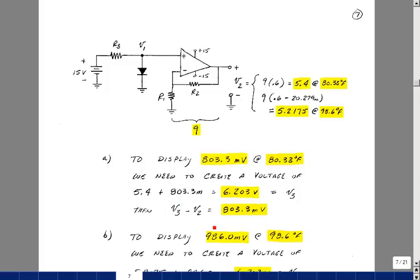I need to create a DC voltage of 6.203 volts, and then I'm going to hook up the terminal of the multimeter to that, the plus terminal, and the minus terminal over here, so when I subtract them, I get 803.3 millivolts.